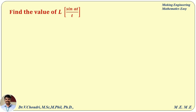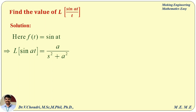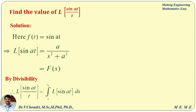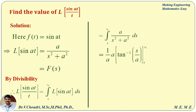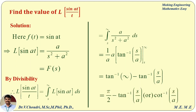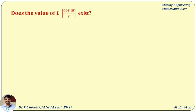Example: Find the value of L of sin(at)/t. This is of the form L of f(t)/t where f(t) = sin(at). The Laplace transformation of sin(at) equals a/(s² + a²), which is F(s). By the divisibility formula, L of sin(at)/t equals integral from s to infinity of a/(s² + a²) ds. This is of the form integral dx/(x² + a²), giving (1/a) tan⁻¹(s/a) with limits s to infinity. Applying limits: tan⁻¹(∞) − tan⁻¹(s/a) = π/2 − tan⁻¹(s/a). So we have proved that the Laplace transformation of sin(at)/t exists.